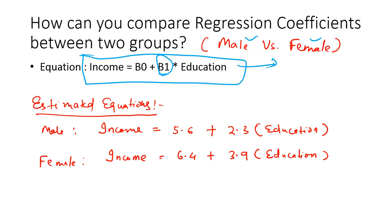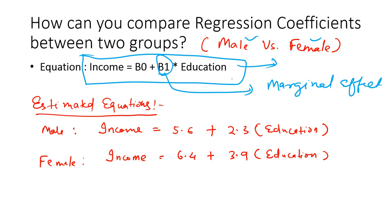So how do we compare? Beta 1 is nothing but your marginal effect rate. If you take the first derivative of income with respect to education you will get beta 1. That means: what is the effect of a change in education on income? That is given by beta 1. So is it different for male and female populations? That is the question.